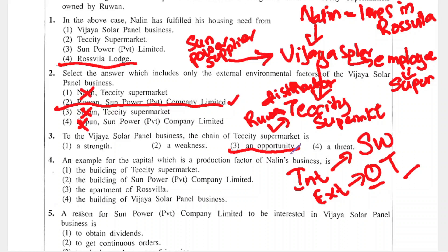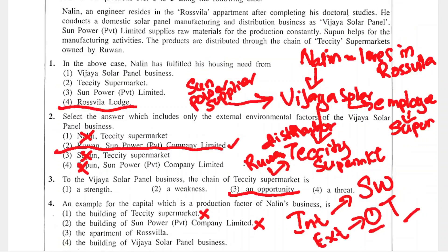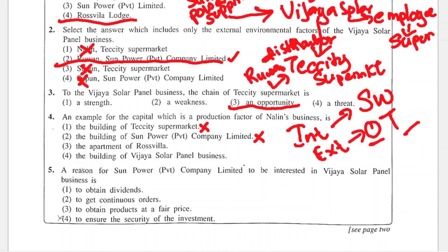Question 4: An example of capital as a production factor of Nalin's business. The building of Teciti Supermarket — no, that doesn't belong to Nalin's business. The building of Sun Power Private Limited — no, that's their supplier. The apartment of Rosvilla — the Rosvilla apartment belongs to Nalin personally, but Vijaya Solar Panel is a different separate entity, so that doesn't count as capital. The building of Vijaya Solar Panel business — yes. The correct answer is 4, because the building in which Vijaya Solar Panel business operates is their capital factor.